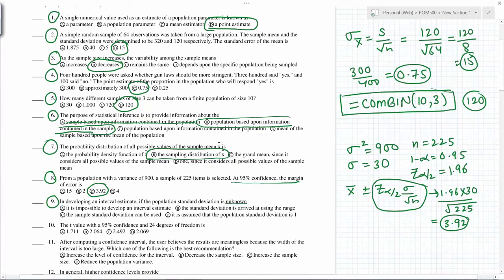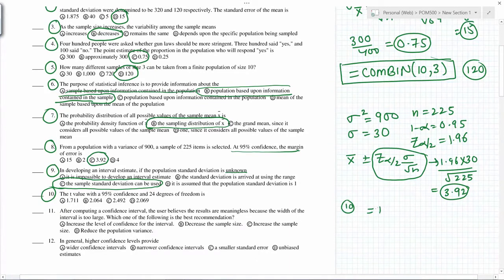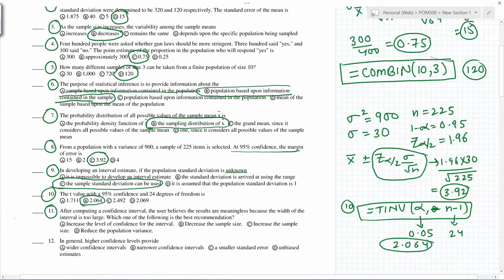In developing an interval estimate, if the population standard deviation is unknown - so sigma is unknown - we use the sample standard deviation. The t value with 95 percent confidence and 24 degrees of freedom: we generally use the formula T INV, alpha and n minus 1. In this case, 0.95 and degrees of freedom is 24, so if you put those values we get 2.064.